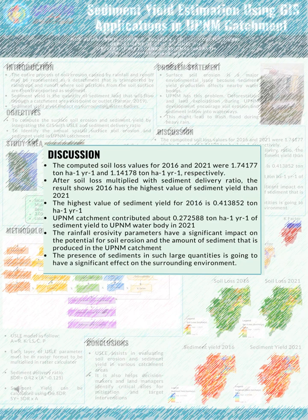The computed soil loss values for 2016 and 2021 were 1.74177 tonnes per hectare per year and 1.14178 tonnes per hectare per year respectively. The lower soil loss in 2021 can be concluded to be because rainfall erosivity in 2021 is less than in 2016. Heavy rainfall, land cover, soil texture, thickness of soil, slope gradient, and support practices implemented in the catchment are the causes of changing soil erosion values. Several studies have shown that catchment soil loss rates are more susceptible to water runoff. After multiplying soil loss with the sediment delivery ratio, the 2016 result shows the highest sediment yield value compared to 2021, with the highest value for 2021 at 0.13852 tonnes per hectare per year. UPNM catchment contributes about 0.272588 tonnes per hectare per year of sediment yield to the UPNM water body in 2021. The rainfall erosivity parameter has a significant impact on the potential for soil erosion and sediment production in the UPNM catchment, and the presence of sediment in such large quantities will have a significant effect on the surrounding environment.